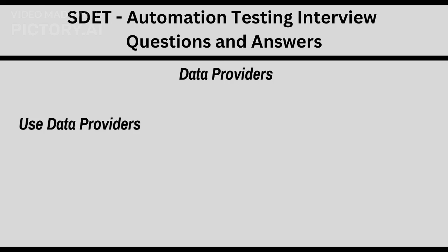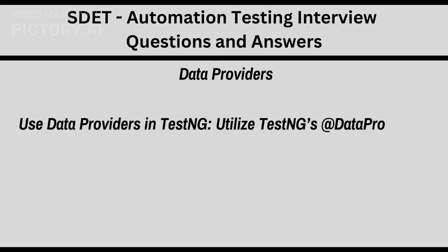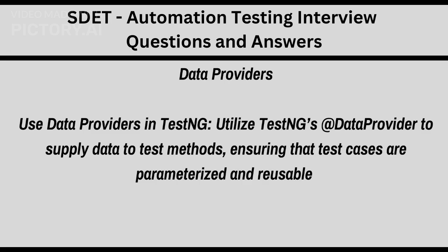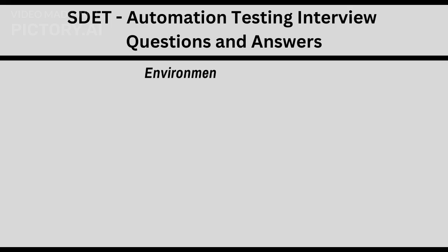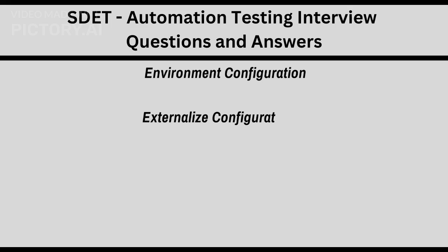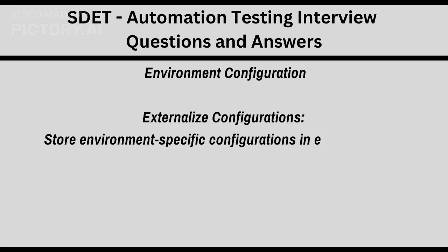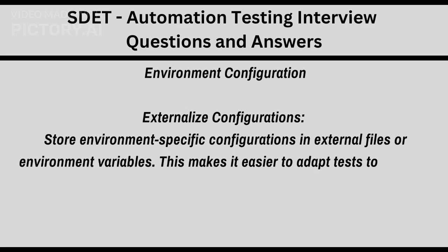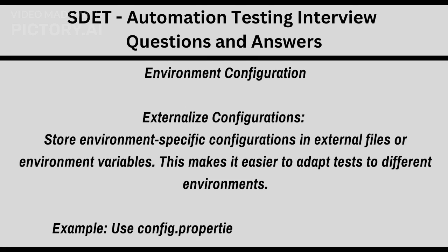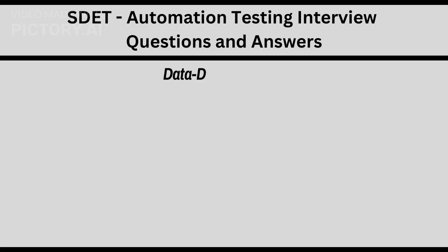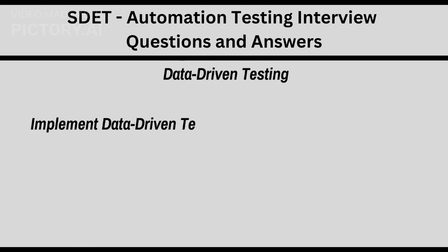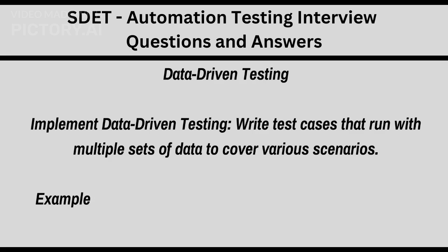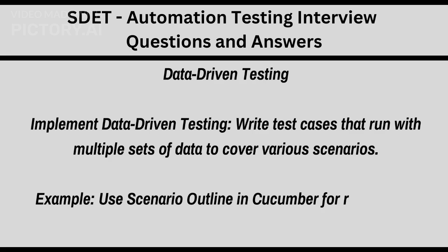Data Providers: use data providers in TestNG — utilize TestNG's @DataProvider to supply data to test methods, ensuring that test cases are parameterized and reusable. Environment configuration: externalize configurations — store environment-specific configurations in external files or environment variables to make it easier to adapt tests to different environments, for example using config.properties. Data-driven testing: write test cases that run with multiple sets of data; use Scenario Outline in Cucumber for running the same test with different data.